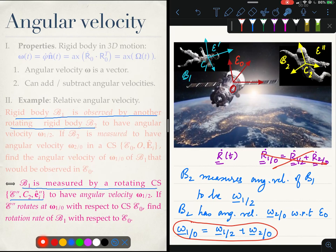In the previous specification I had said B2 is measured to have angular velocity omega 2 0 in a coordinate system E0. I could have said E double prime rotates at this angular velocity with respect to the CS E0. I made an error here, this should be 2.